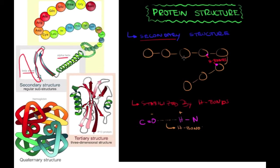In the alpha helix, hydrogen bonds are formed between the loops — this is how the structure is stabilized. In the beta sheet or pleated skirt shape, hydrogen bonds are formed between the pleats or bends where the molecule changes direction. I'm going to show you actual molecules in more detail next.